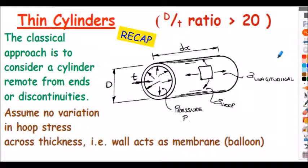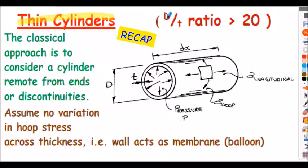Just a few slides of recap — everything's in the previous video so I'm not going to labor this, but just to recap: the topic area we're considering is thin cylinders from our previous lecture. The classification for a thin cylinder is that the diameter-to-thickness ratio, the d/t ratio, must be greater than or equal to 20.